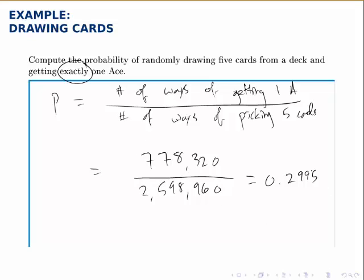So the probability of drawing five cards and getting exactly one ace is the 778,320 divided by the number of ways of selecting five cards, which is over two and a half million. As a decimal, that number is about 0.3. So if you randomly pick five cards, there's close to a 30% chance that you'll get exactly one ace in your hand.